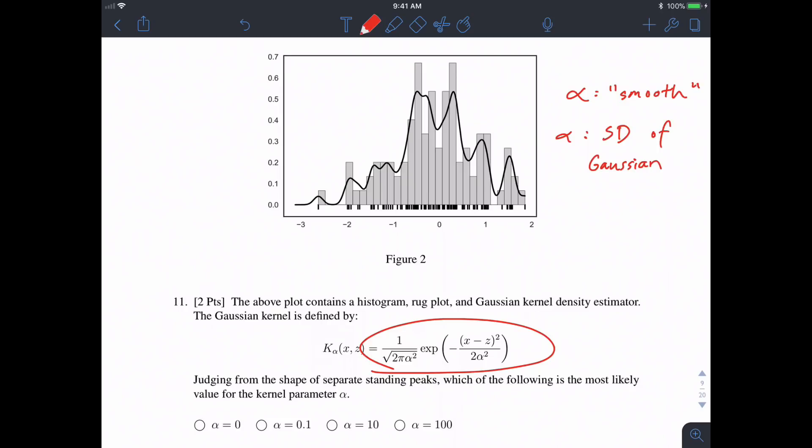Whereas if alpha is large, it means your values vary a lot, so your normal curve is very wide and shallow. Small alpha will look something like that; a large alpha might look something like, I don't know, that.